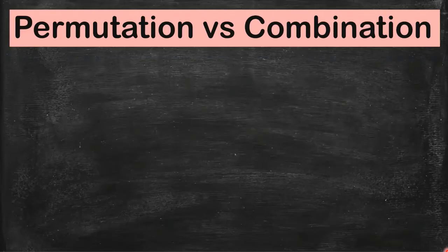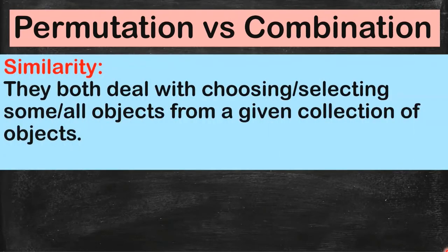Let's begin with their similarities. So a permutation and a combination both deal with choosing or selecting r objects from a given collection of n objects. They're similar in that way.